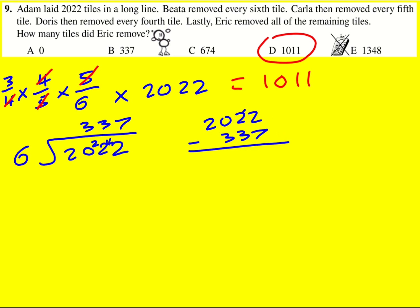And then I took the 2022—I could of course have times that by five, but I actually minused three three seven from it. Just did some subtraction, so one six eight five.